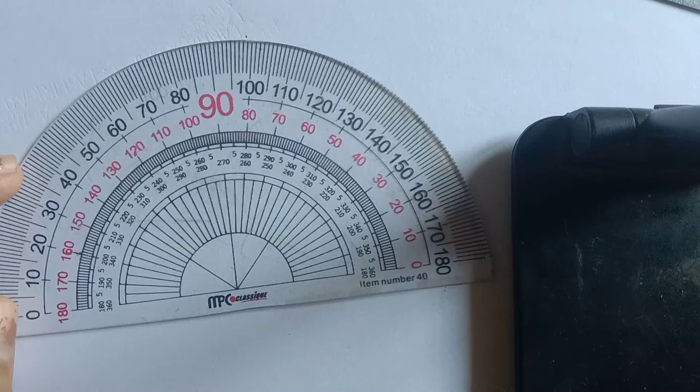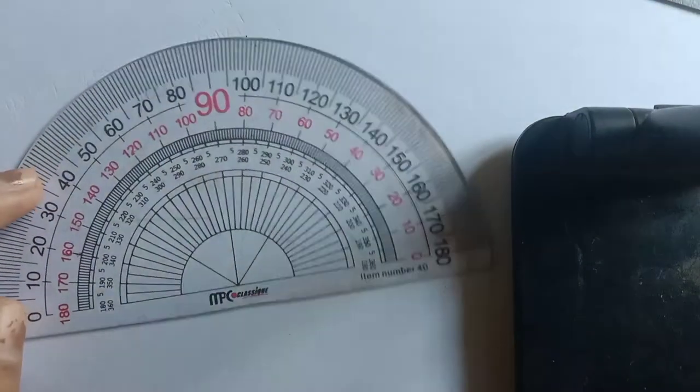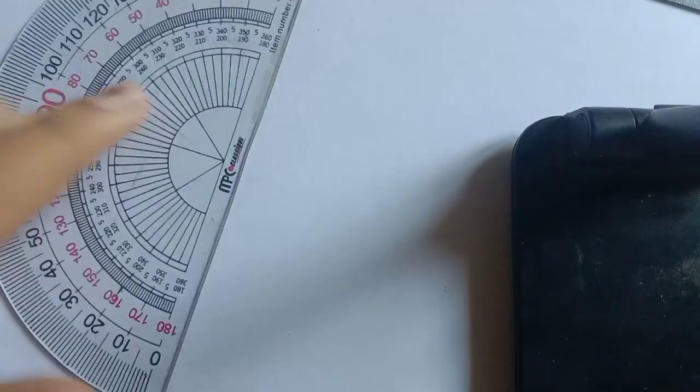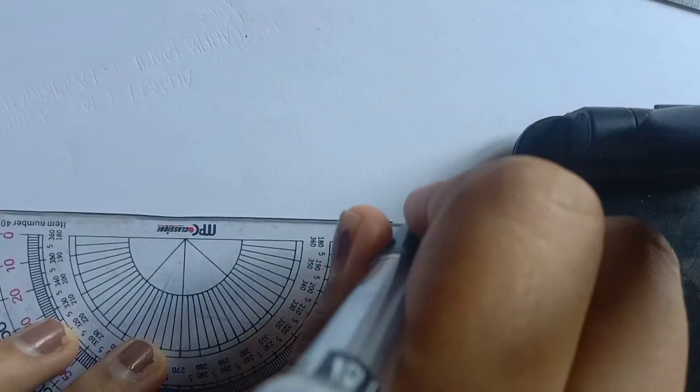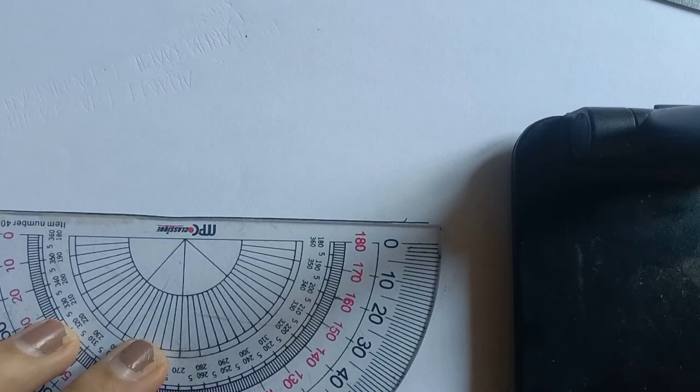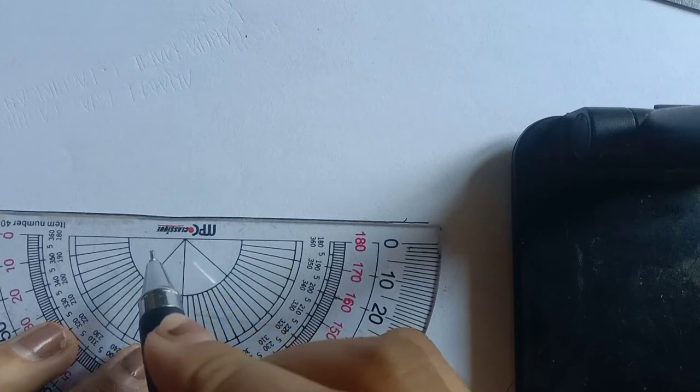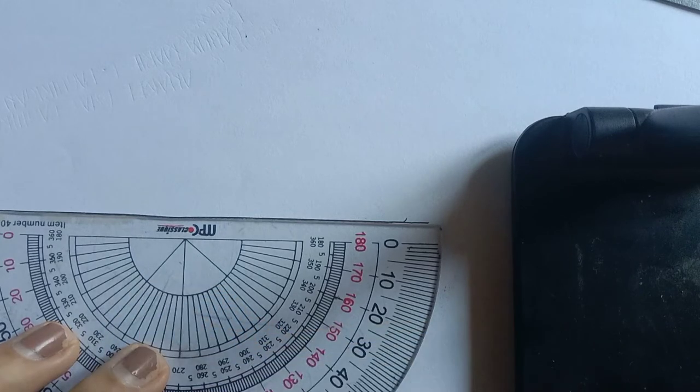If you want to construct an angle, first off, start with drawing a straight line. And then, taking the hole or the point here on the protractor, put it at the end of that line with the protractor lining up.